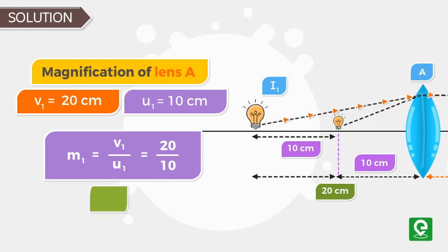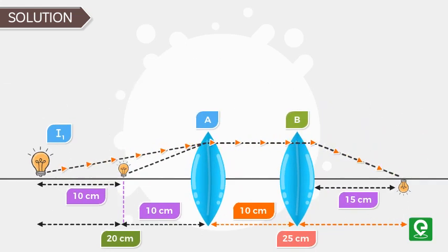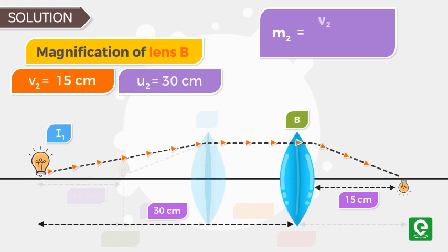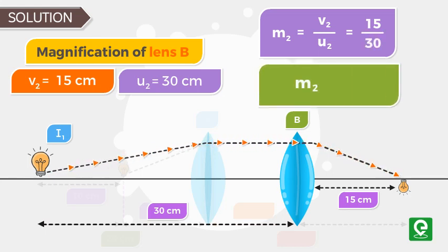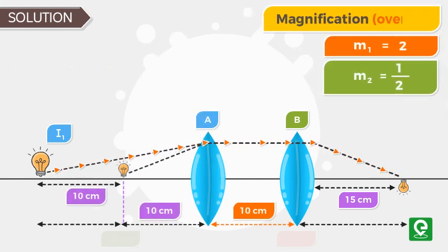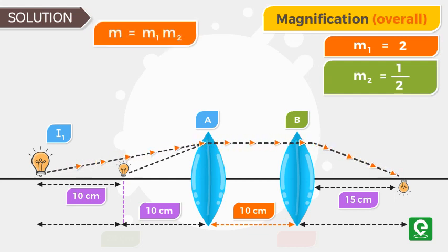For lens B, magnification M2 is equal to V2 by U2. Here V2 is 15 and U2 is 30, so M2 will be 15 by 30, that is 1 by 2. So overall magnification can be written as M1 into M2.